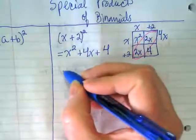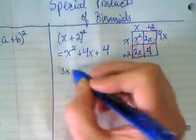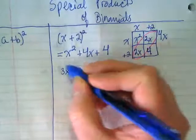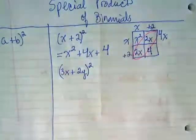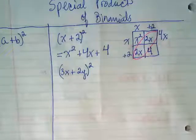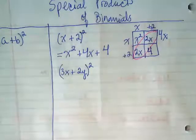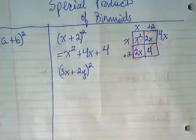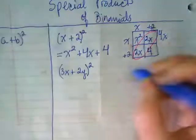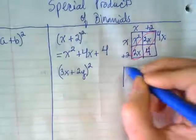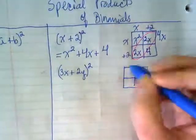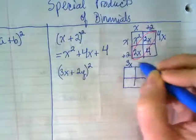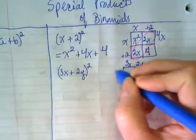Let's do a similar example. (3x+2y)². We're going to make a box. And the same two terms go across the top, 3x and 2y, as go down the side.